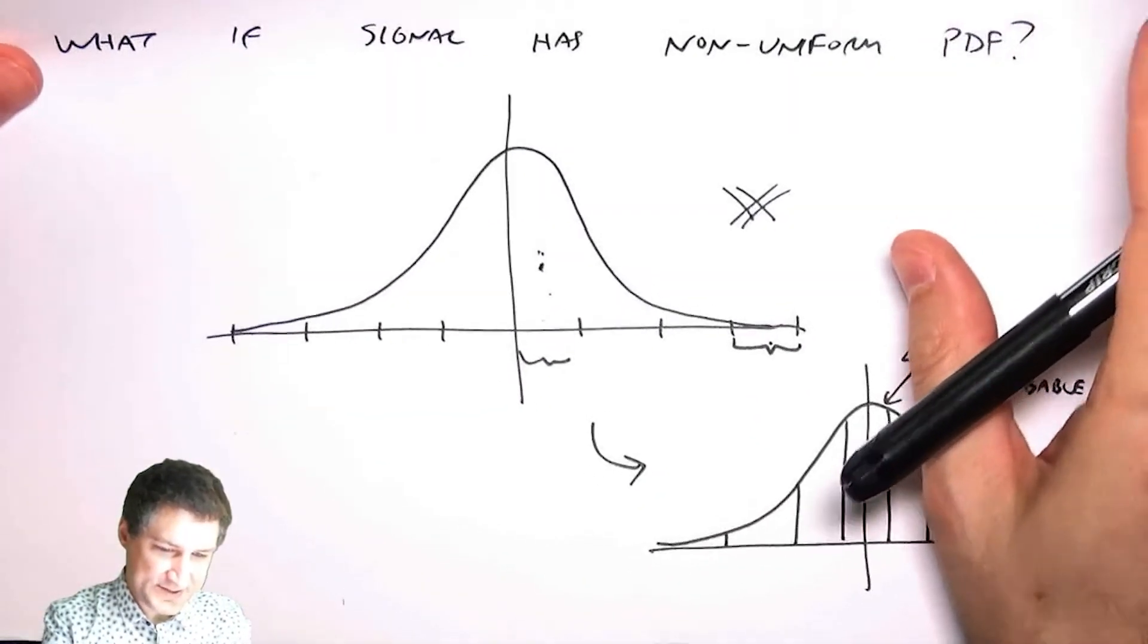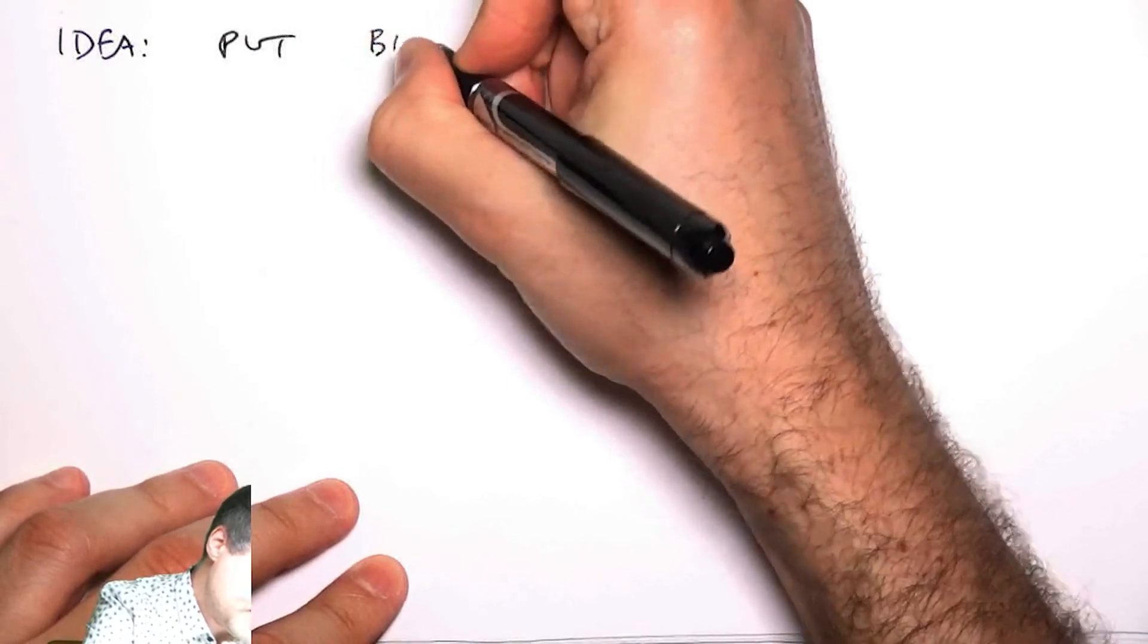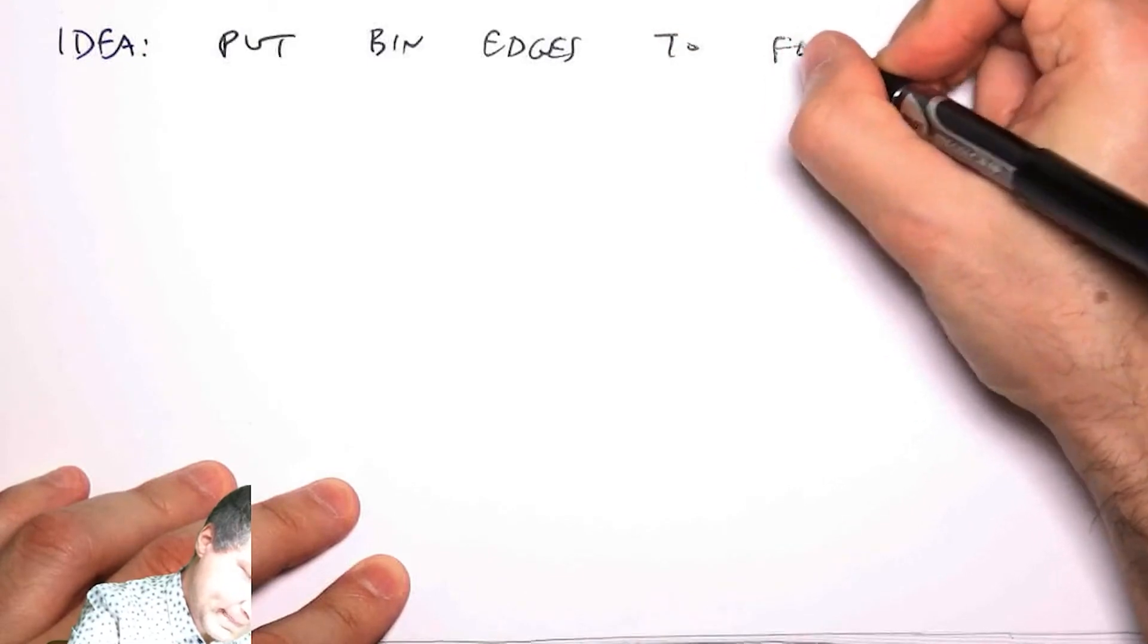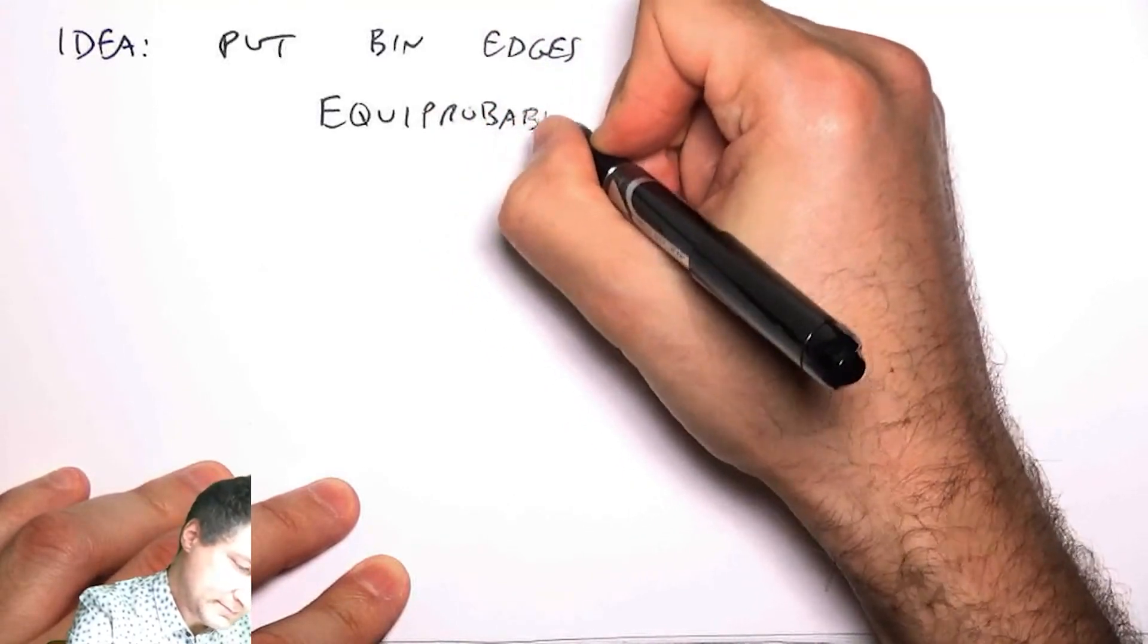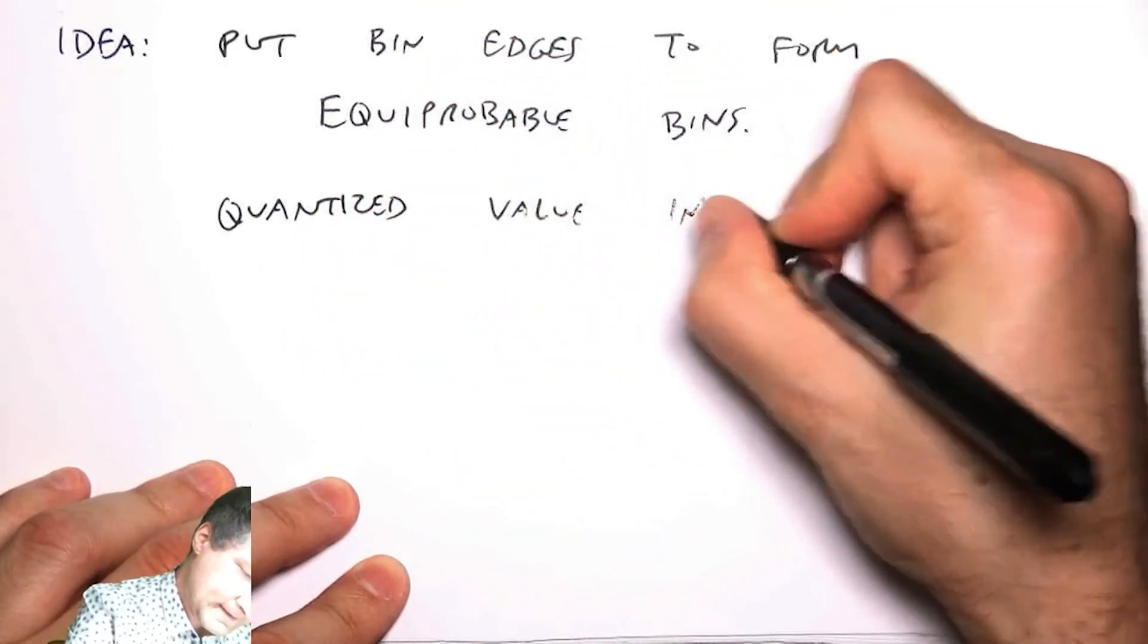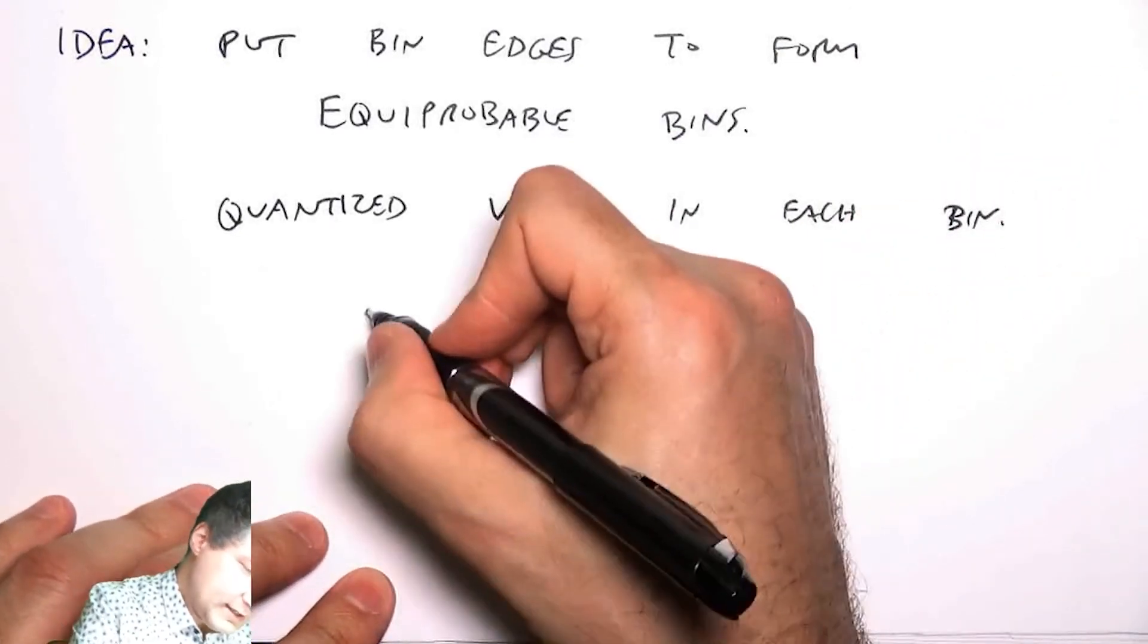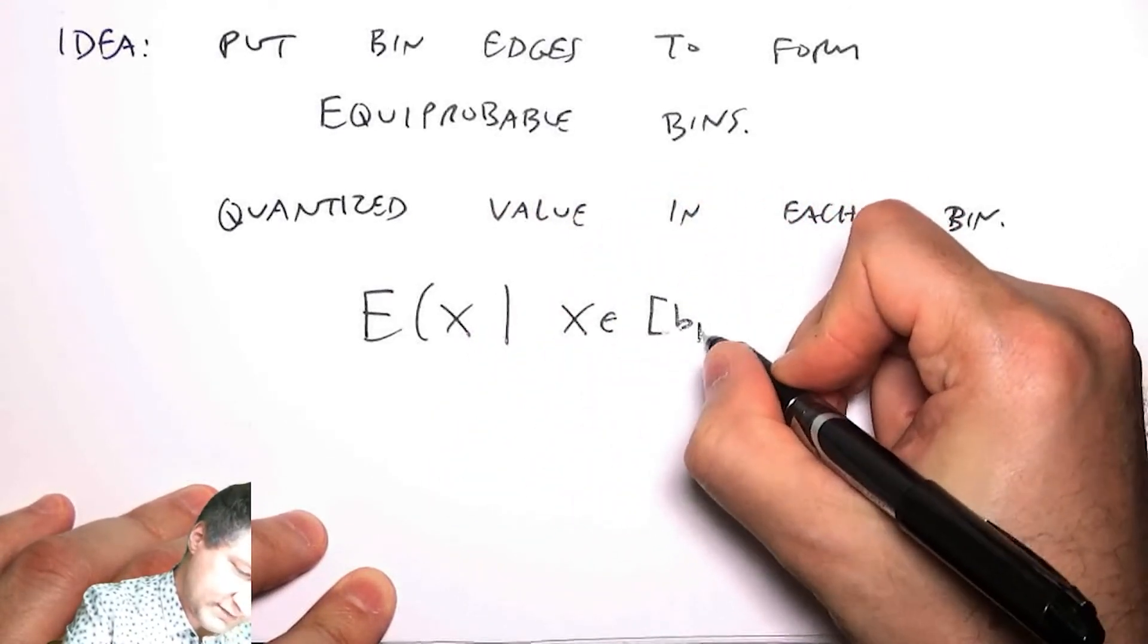So basically the idea is to put the bin edges to form equiprobable bins. And then the quantized value in each bin, it makes sense that it should be basically the expected value of X given that X is in a given bin.